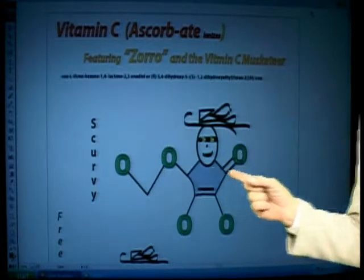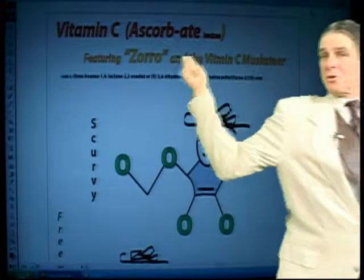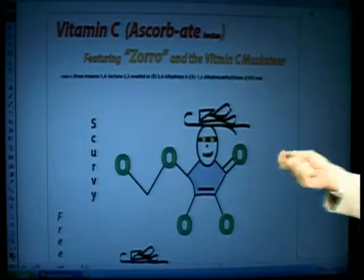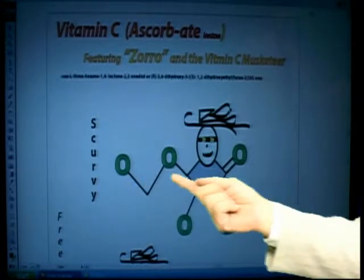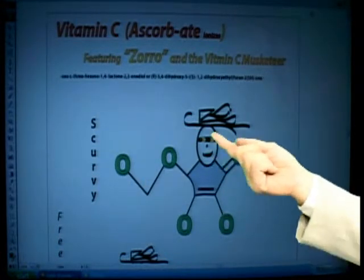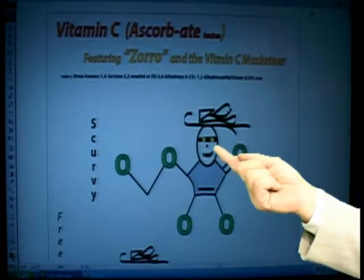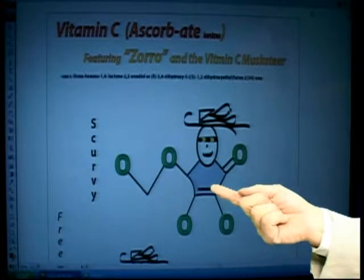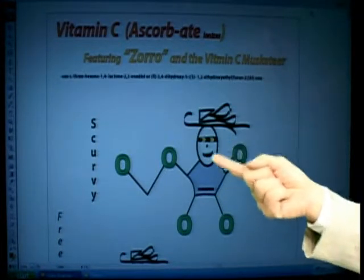But look at the molecule. If you can remember it — I've seen it as a musketeer — we'll draw it as Zorro. The oxygens give the sword-type structure to it. This will give a little cover his eyes so you don't know who he is, right? We've got a double bond. This is a penta — five-membered ring with an oxygen in it.